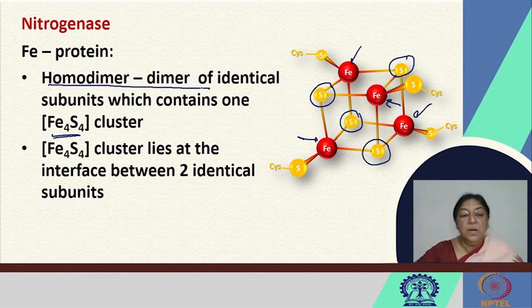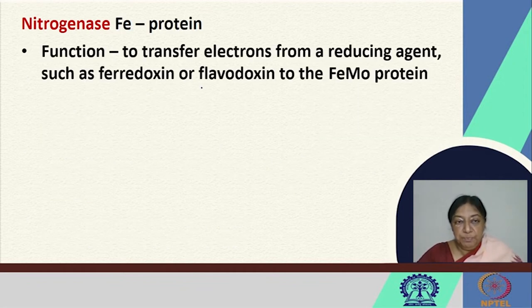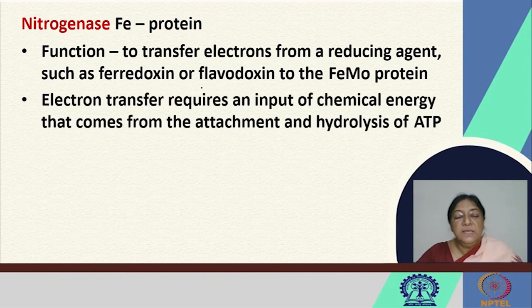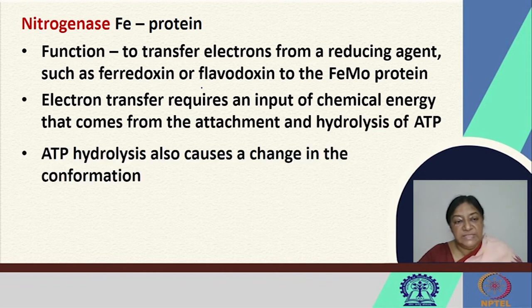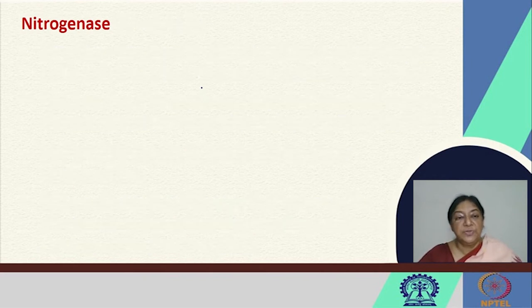The function of the Fe protein is to transfer electrons from a reducing agent, such as ferredoxin or flavodoxin, to the FeMo protein. This electron transfer requires an input of chemical energy from the attachment and hydrolysis of ATP. The ATP hydrolysis results in a change in conformation, and following this conformational change, the electron transfer is facilitated by bringing the Fe protein and the FeMo protein closer to each other.